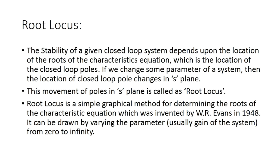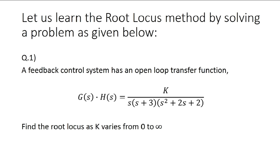Root-locus can be drawn by varying a parameter — usually the gain of the system is varied from 0 to infinity. Let us learn the Root-locus method by solving a problem. The question is: a feedback control system has an open-loop transfer function G(s)H(s) = K / [S(S+3)(S²+2S+2)]. Find the Root-locus of the system as K varies from 0 to infinity.